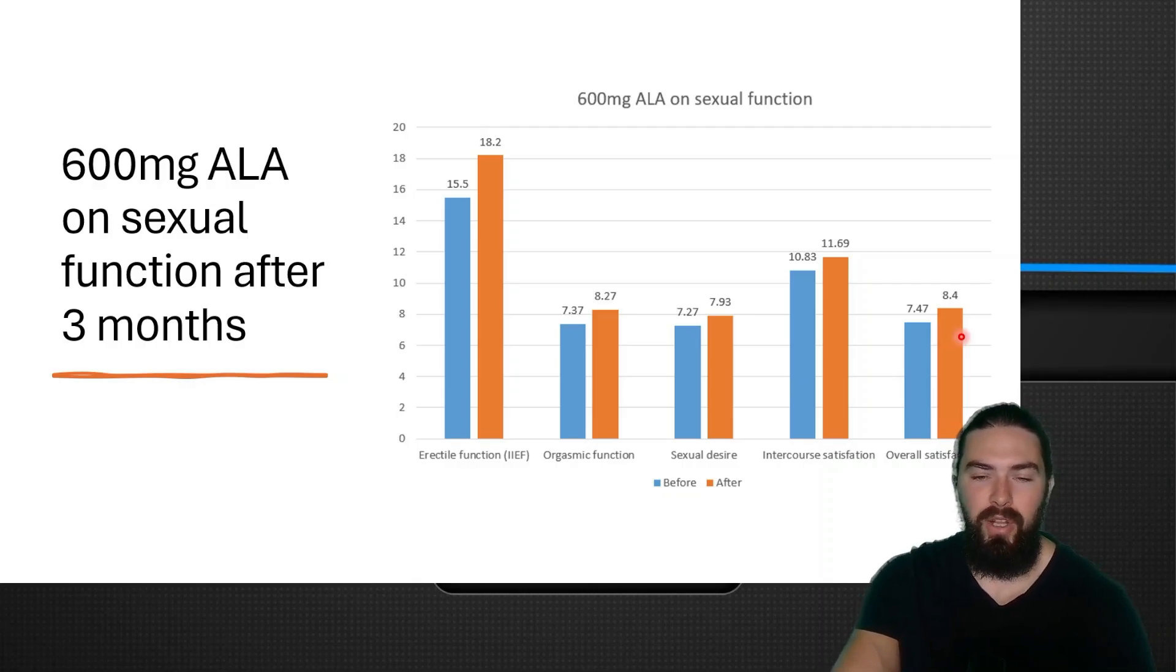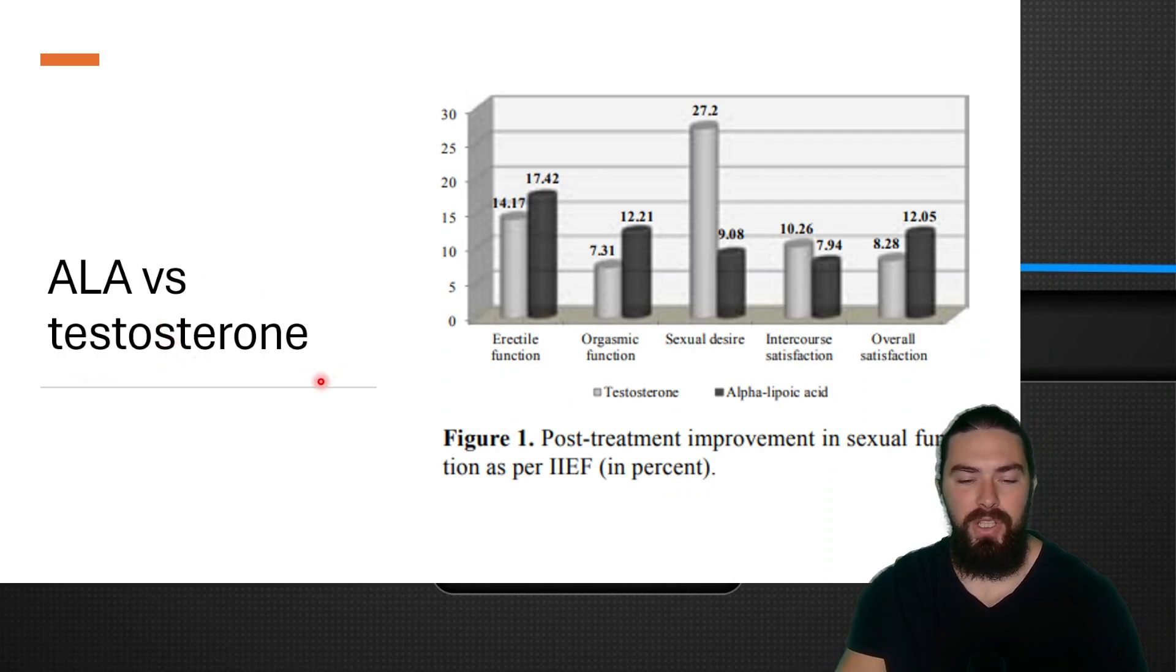This was alpha lipoic acid versus testosterone—testosterone was this light gray column and alpha lipoic acid was the dark gray column. Interestingly, in terms of erectile function, alpha lipoic acid was more beneficial at improving erectile function than testosterone, also increasing orgasmic function compared to testosterone. But testosterone was the best at enhancing sexual desire—it seems to be a lot more dopaminergic. Intercourse satisfaction went up the most with testosterone, which is interesting, and then overall satisfaction went up the most with alpha lipoic acid. It's really interesting that they did a comparison study where alpha lipoic acid was slightly better than testosterone, but in some cases testosterone was also better.